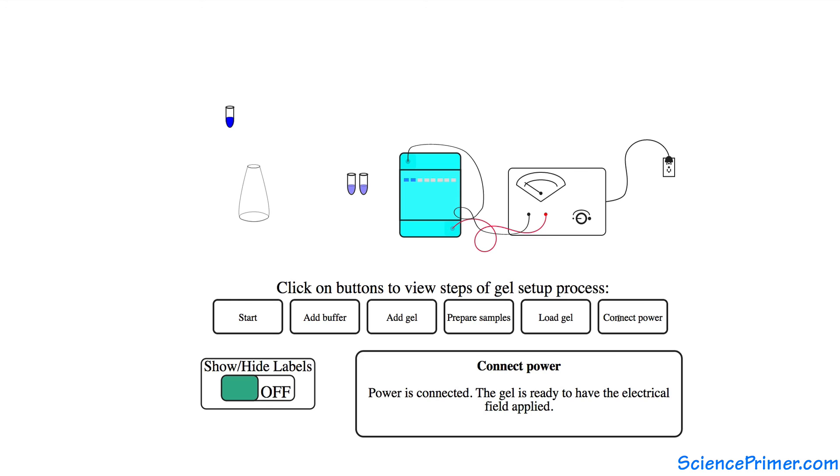While the gel type, pre- and post-processing, and factors that influence migration vary from application to application, a solid understanding of this description of agarose gel electrophoresis of linear DNA provides the foundation upon which an understanding of the other electrophoresis techniques can be built.